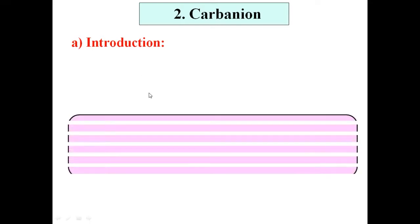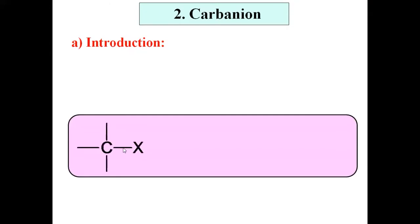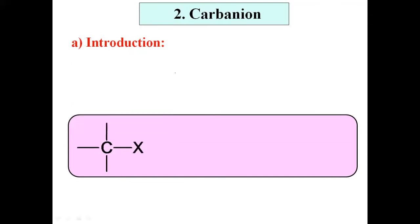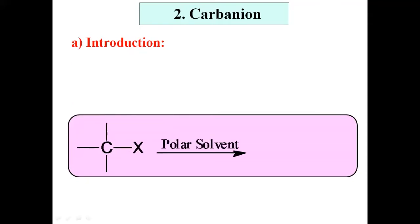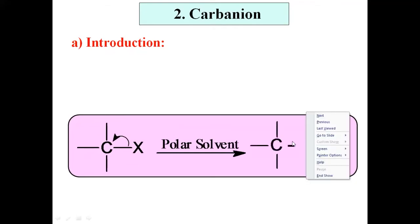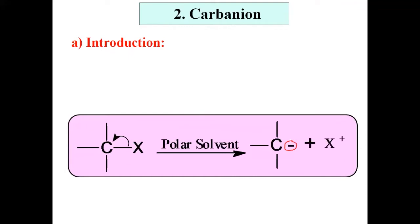Now what do we mean by carbanion? Let us see a simple example. Suppose this is an organic compound with carbon having four covalent bonds. Now in the presence of a polar solvent, suppose it undergoes heterolytic bond breaking. During heterolytic fission, if this electron pair goes towards carbon and carbon acquires negative charge while another atom X acquires positive charge, this happens only when that carbon is more electronegative than X.